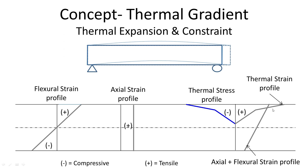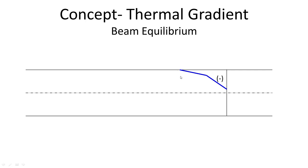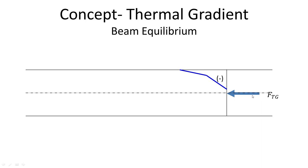However, if the thermal strain profile is nonlinear, the beam is not capable of generating that nonlinear strain profile, thereby constraining it and generating a thermal stress profile. Once you have the thermal stress profile, it will also generate a net force on the cross-section, and this net force can be obtained by integrating the stress over the cross-section. This force is generally eccentric to the neutral axis of the beam, so if we shift it to the neutral axis, it will be accompanied by a thermal gradient moment.